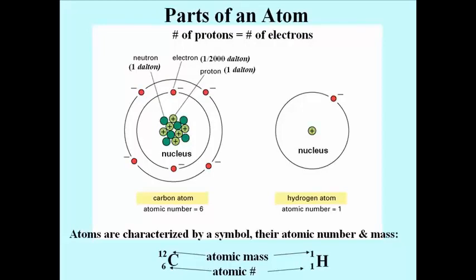We use the convention shown here in the carbon and hydrogen examples to indicate the element by its symbol, its atomic number as the left subscript, and mass as the left superscript.